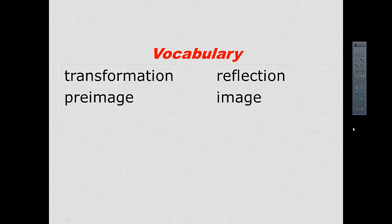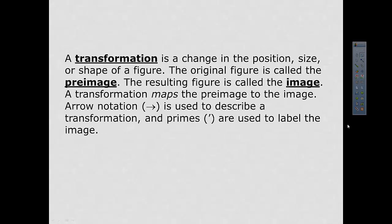And some vocabulary in this section, we have transformation and reflection, which should be known to us, and then we also have preimage and image, which may be new. Transformation, simply put, is a change in the position, size, or shape of a figure. The original is called the preimage. Pre tells you it comes first, and then after it's been transformed, that's called the image. So you have pre, before, and then the image after.